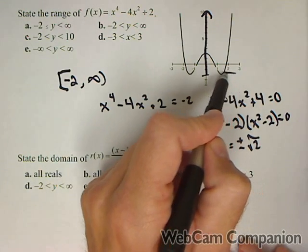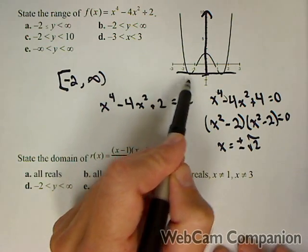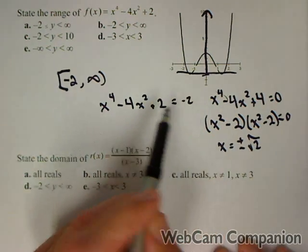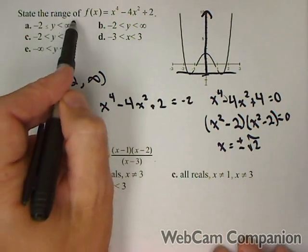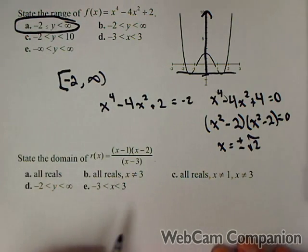Now with a graphing calculator, we could have put a horizontal line in it, y equals negative two, and seen if the two graphs intersect. So both methods will work to show us that our answer is a.